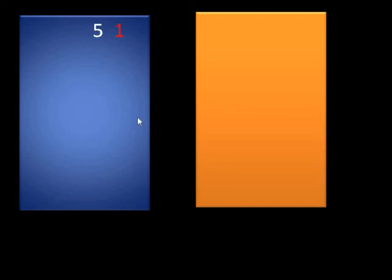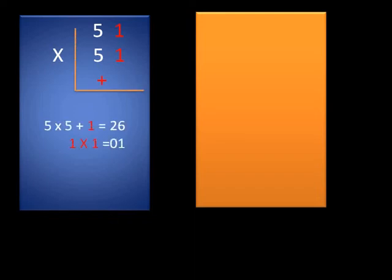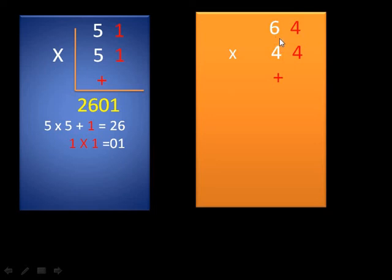Next example: 51 × 51. Using the L-shape method — 5×5 = 25, and we add the unit digit 1, so 25 + 1 = 26. Then 1×1 = 1, but on the right side two digits are compulsory, so we write 01. The answer is 2601.